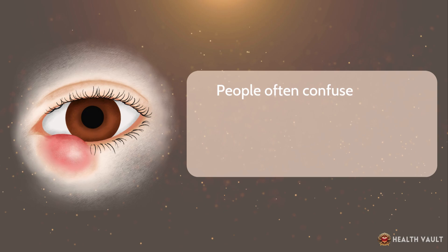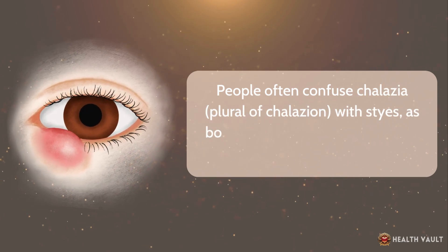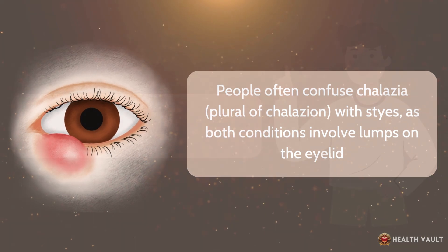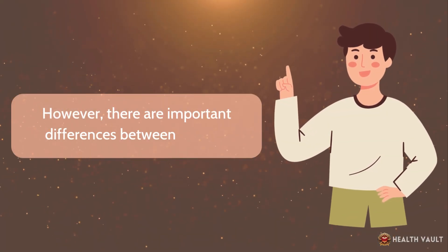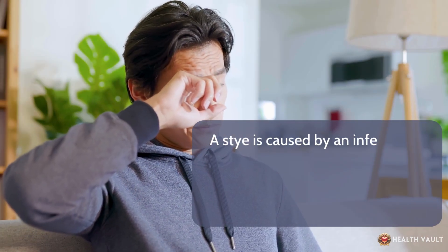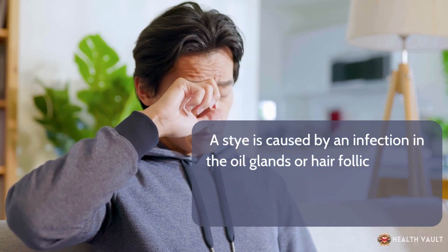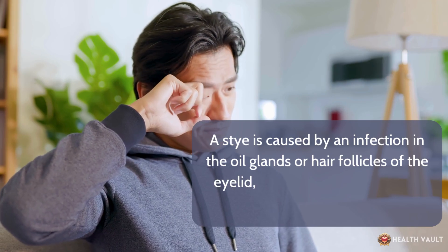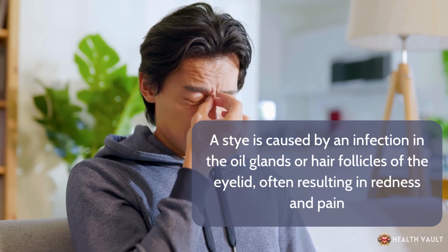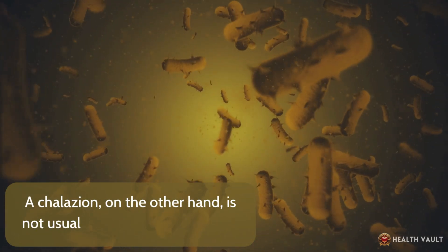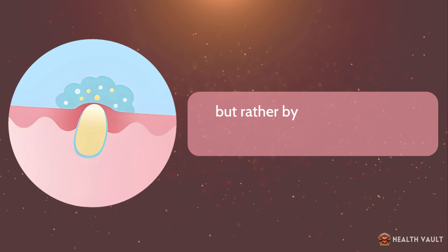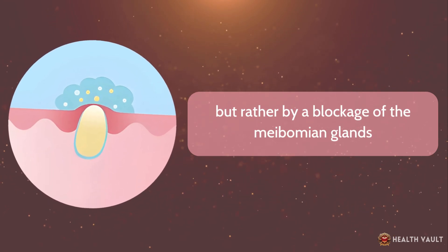People often confuse chalazia with styes, as both conditions involve lumps on the eyelid. However, there are important differences between the two. A stye is caused by an infection in the oil glands or hair follicles of the eyelid, often resulting in redness and pain. A chalazion, on the other hand, is not usually caused by an infection, but rather by a blockage of the meibomian glands.